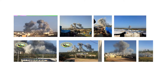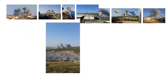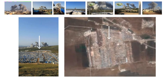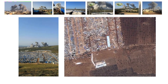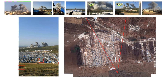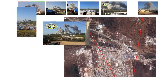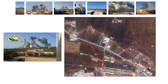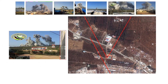We locate each of the cameras capturing the events by comparing recognisable structures in the photographs and the satellite image. We notice the shadow of a large building on the left and find that building in the satellite picture. We measure those reference points to establish an accurate point of view. In a similar fashion, we locate the photographer's position of other images.